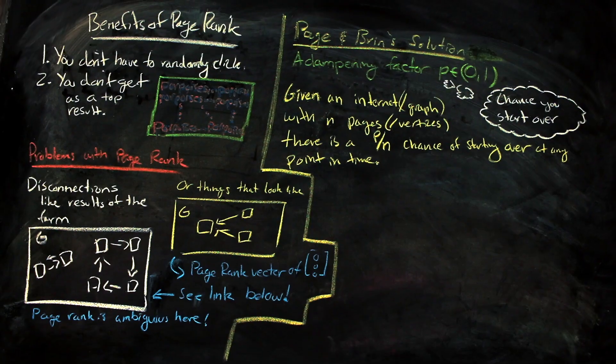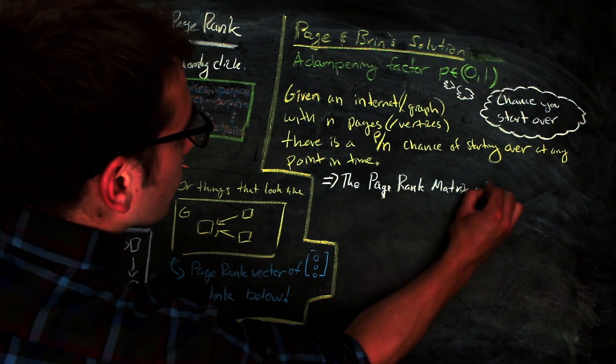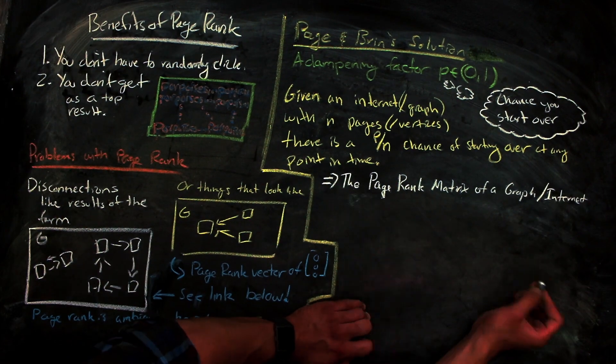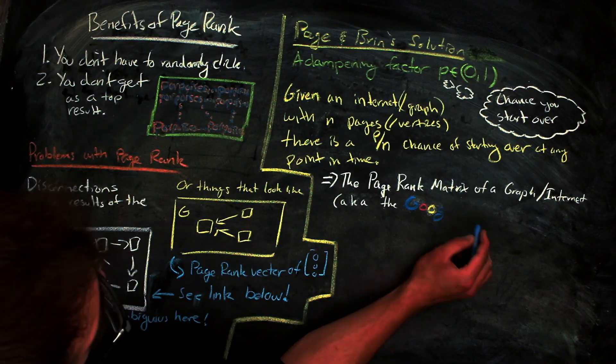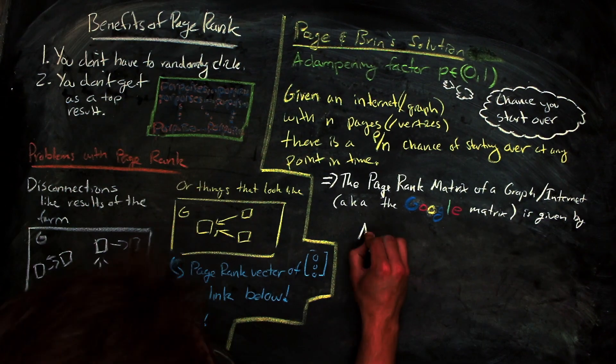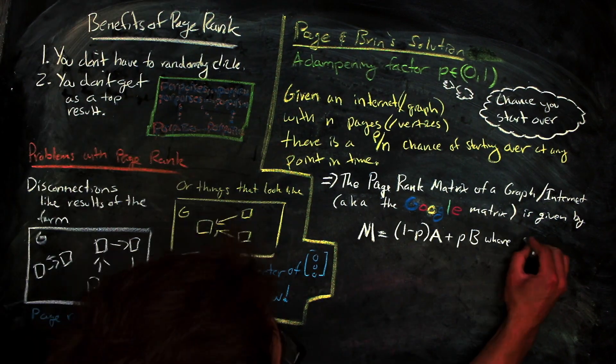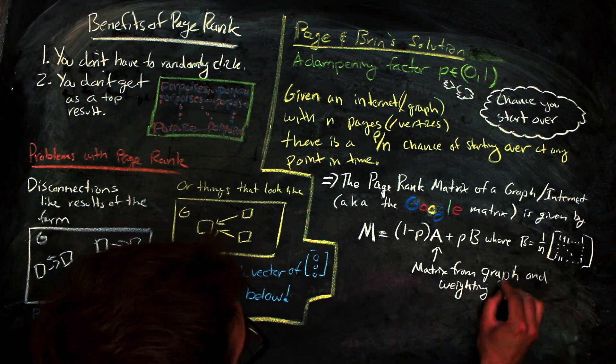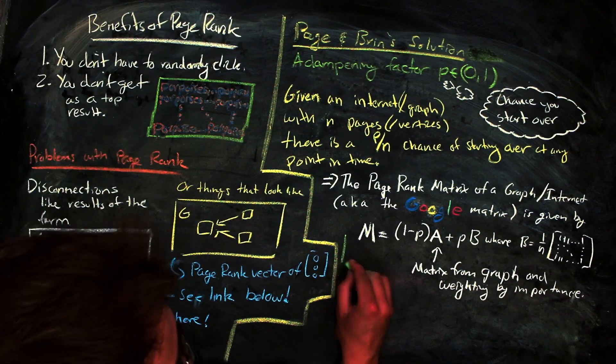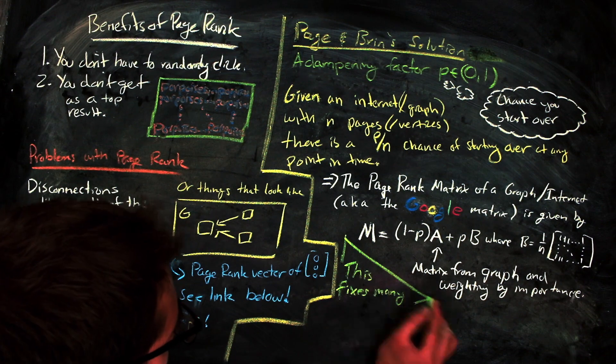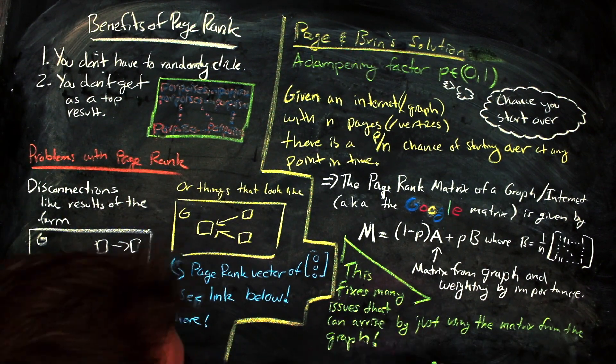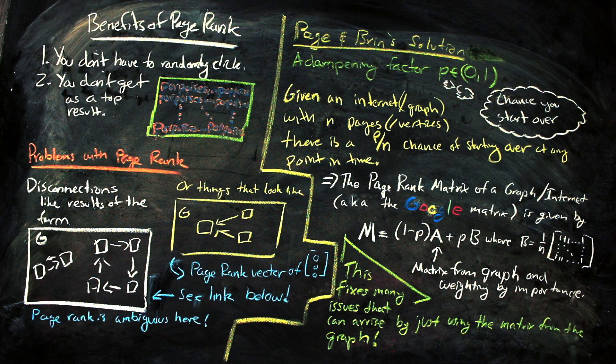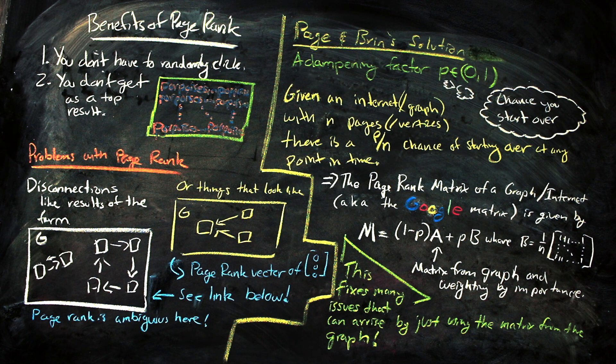This dampening factor allows us to define what is known as the page rank matrix, which is also known as the Google matrix, if you're interested. But anyway, the page rank matrix is given by the following, where A is just the matrix that we had from looking at the weighted transition matrix of the graph of the internet alone. Using this matrix, we can get a page rank vector that actually makes sense in the scenarios that gave us problems before, because the page rank matrix kind of forces all of the pages in your internet to be connected, even if they might not be.